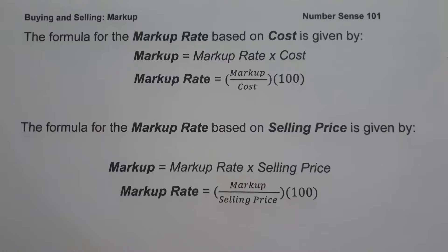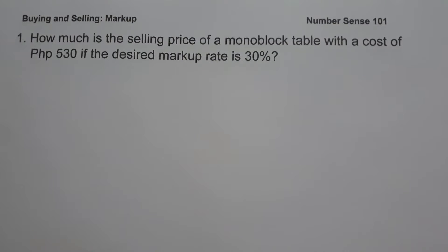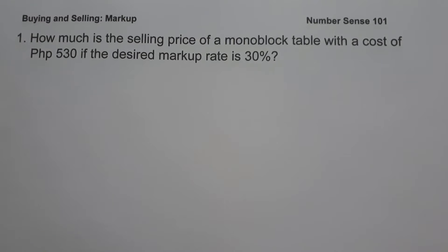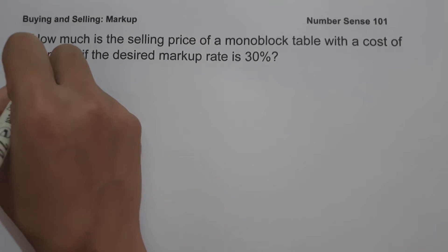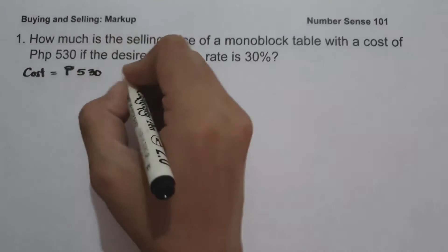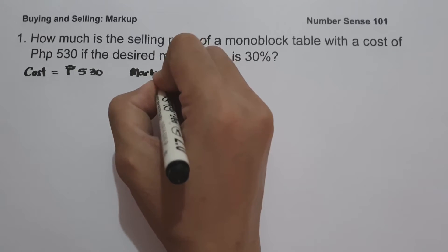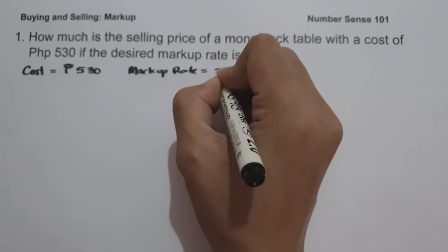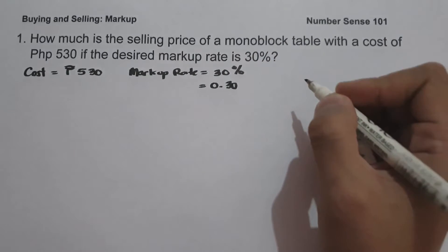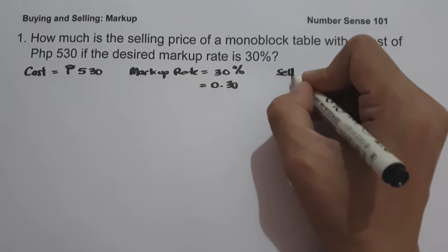Let's start and have an example. On example number one: how much is the selling price of a monoblock table with a cost of 530 pesos if the desired markup is 30 percent? To determine the selling price, let us identify our given: cost is 530 pesos, and markup rate is 30 percent or 0.30 in decimal. We are looking for the selling price.